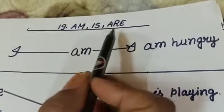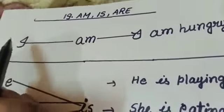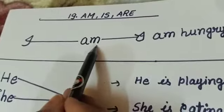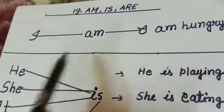These words are called auxiliary verbs. So look here. With I, we use am. I am hungry.